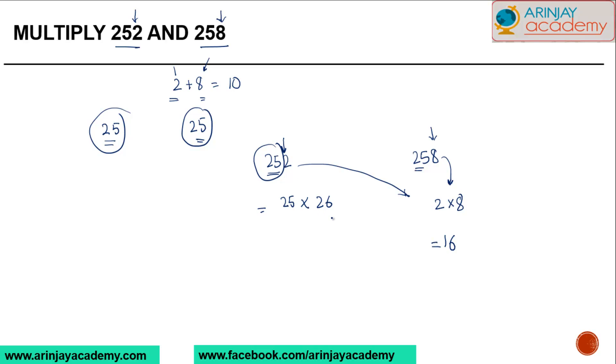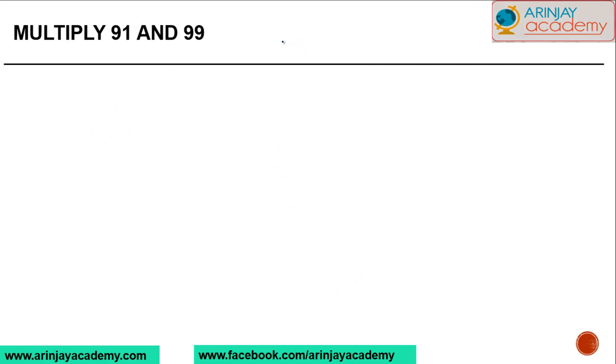When I do 25 by 26, the answer I get is 650. So 650 will become the left part of my answer, 16 will become the right part of my answer. And this is what I get if I multiply 252 and 258: the answer will be 65016.